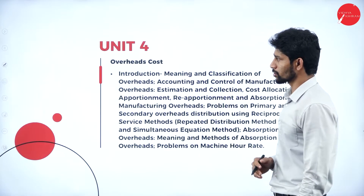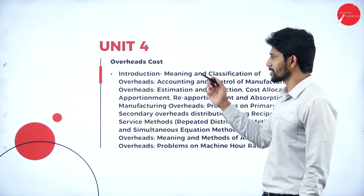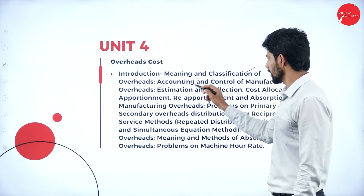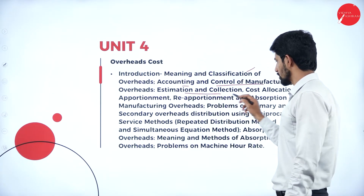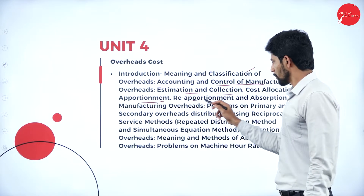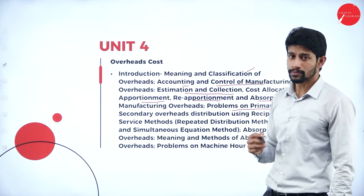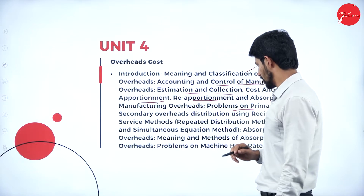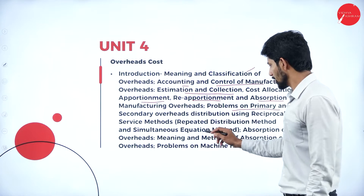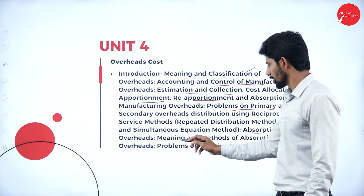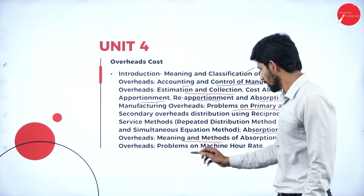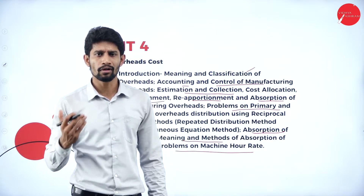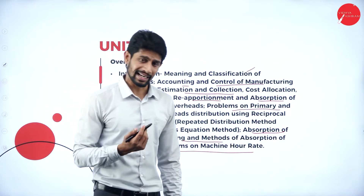Unit Four deals with overhead cost. Overhead is expenditure other than direct costs. In this unit we will study the meaning and classification of overhead, accounting and controlling of manufacturing overhead, cost allocation, apportionment, reapportionment, and absorption of manufacturing overhead. We will also solve problems on primary and secondary overhead distribution using the reciprocal service method — the repeated distribution method and the simultaneous equation method — and problems on machine hour rate.